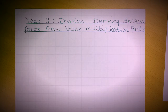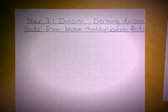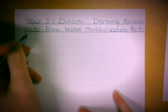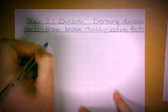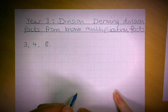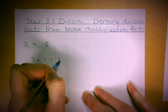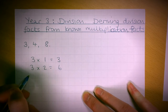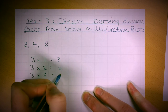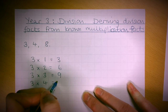We're doing some Year 3 division, and the best way to do this is by knowing that division is the inverse of multiplication — it's the opposite operation. So if you know your times tables well, you've got very little working out to do. In Year 3, you need to know your 3s, 4s, and 8 times tables, so I encourage the children to write out the times table for whichever question they're working on.